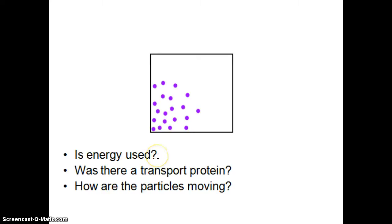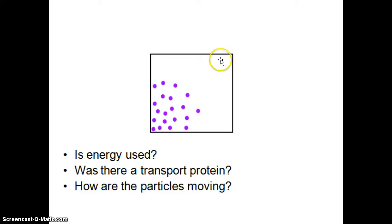So is energy being used? There's no picture here of ATP or any use of energy, so we know it must be passive — but we just don't know what type of passive it is. We need to look and see if there's a transport protein. If there's no transport protein being used, it would be simple diffusion. If we use a transport protein, that would be an example of facilitated diffusion. Are we going from a high concentration moving out to where there's low concentration? Yes, so that would be passive. No energy used, no protein used, molecules moving from high to low — that would be simple diffusion.